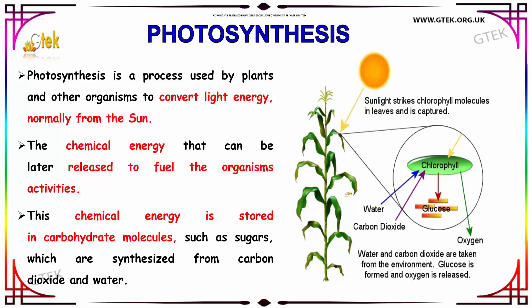Photosynthesis is a process used by plants and other organisms to convert light energy — normally from the sun — into chemical energy that can be later released to fuel the organism's activities. This chemical energy is stored in carbohydrate molecules such as sugars, which are synthesized from carbon dioxide and water. You can see that water and carbon dioxide are both absorbed by chlorophyll, and glucose and oxygen are produced, carried out in front of sunlight.